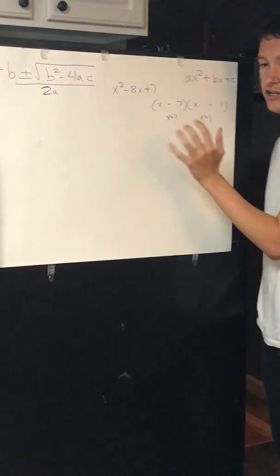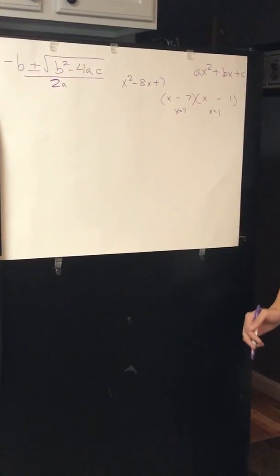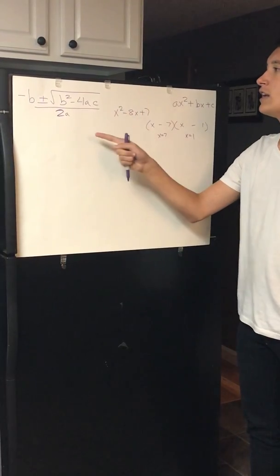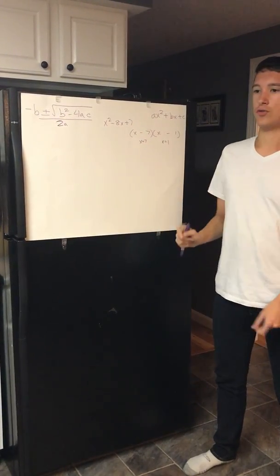Thankfully, I have a very easy equation. If this equation doesn't work, or even the factoring method doesn't work, or any other method, you want to use quadratic equation. Negative b plus or minus b squared minus 4ac all over 2a.